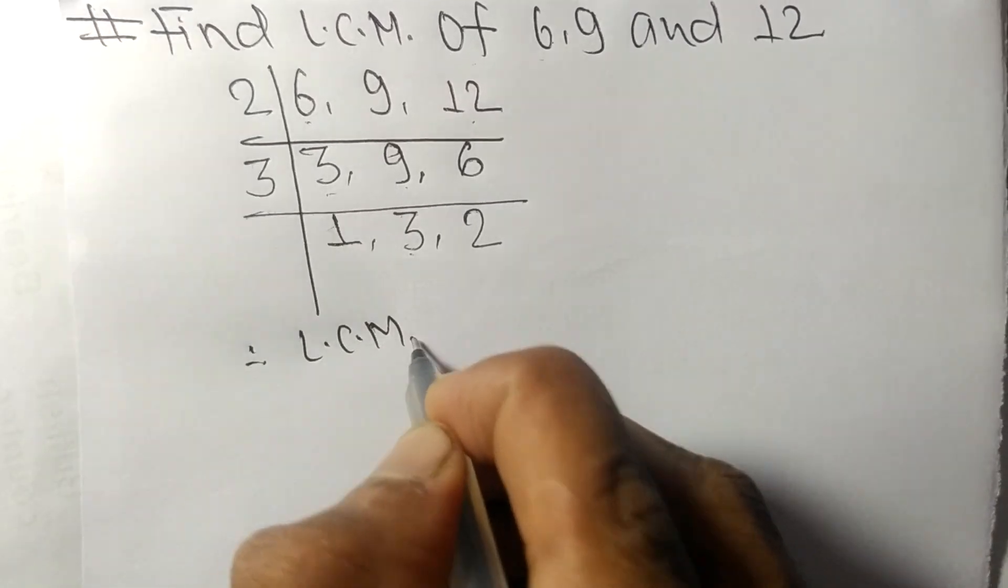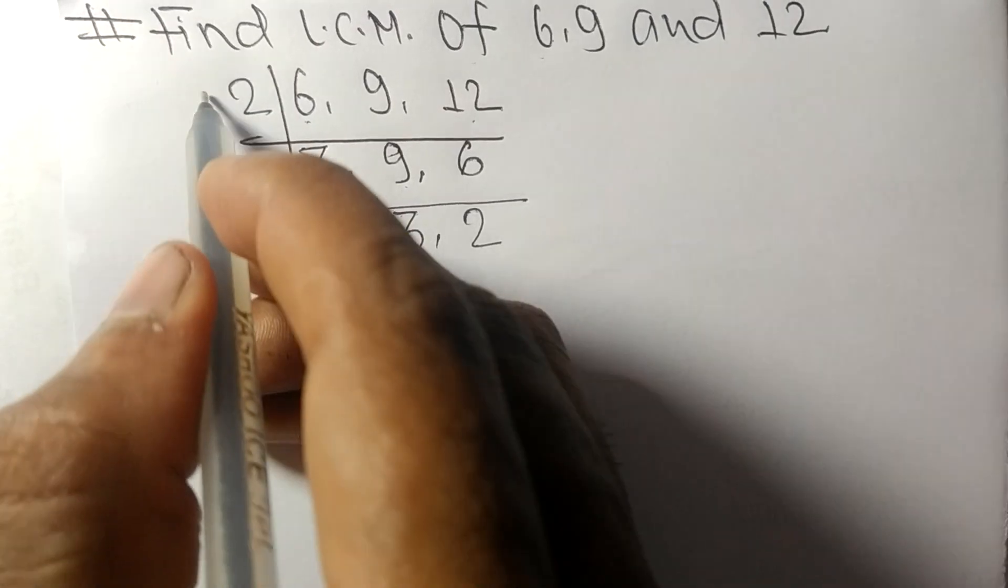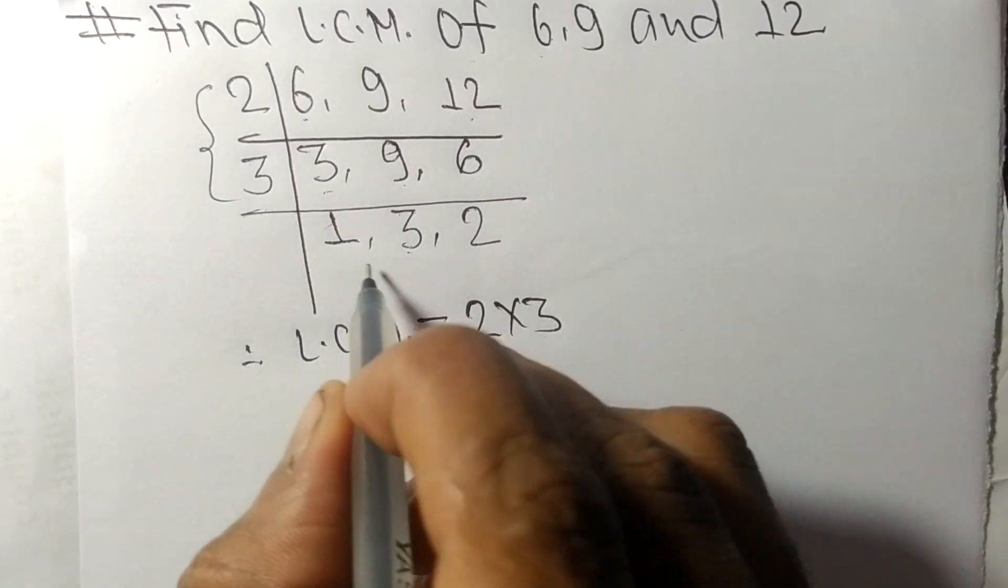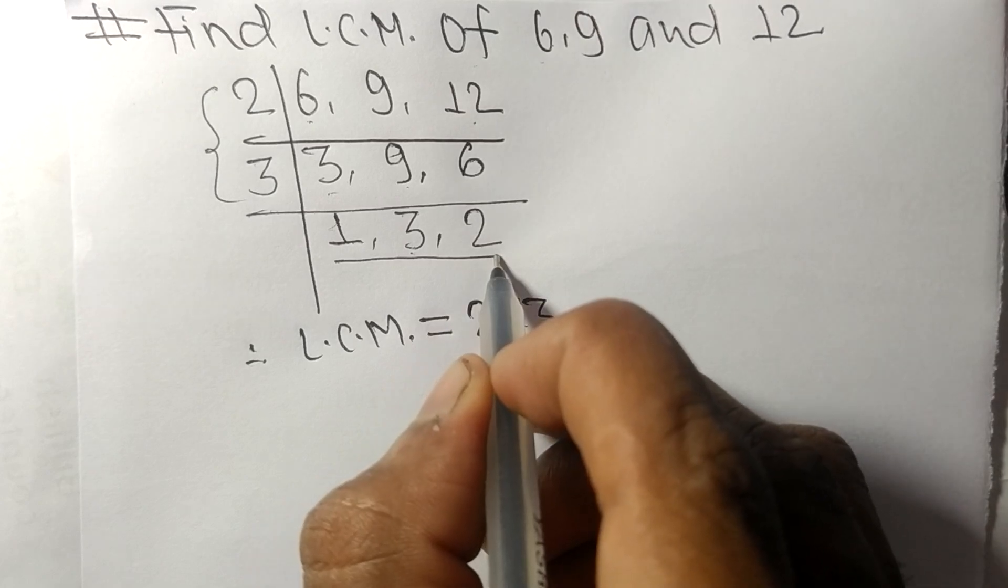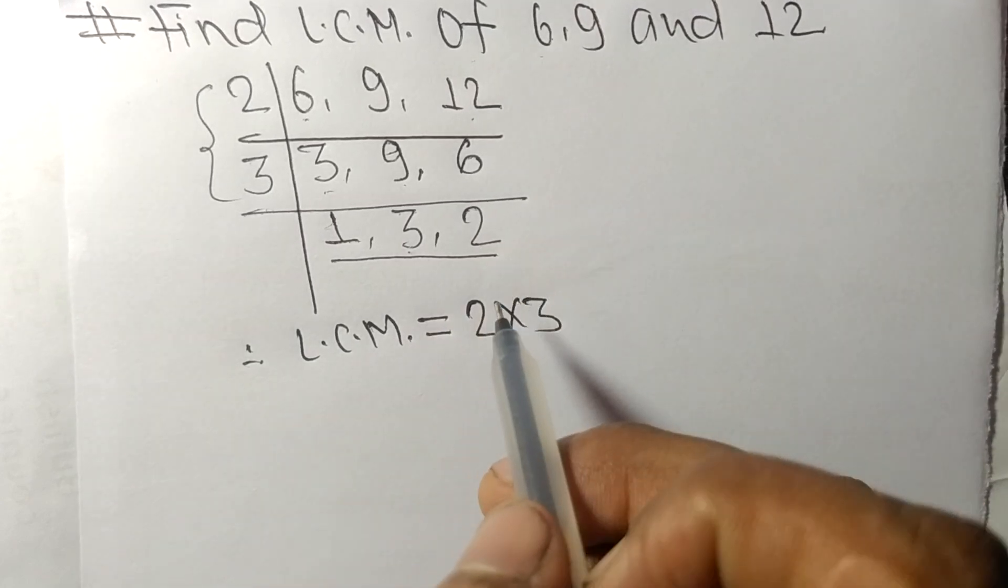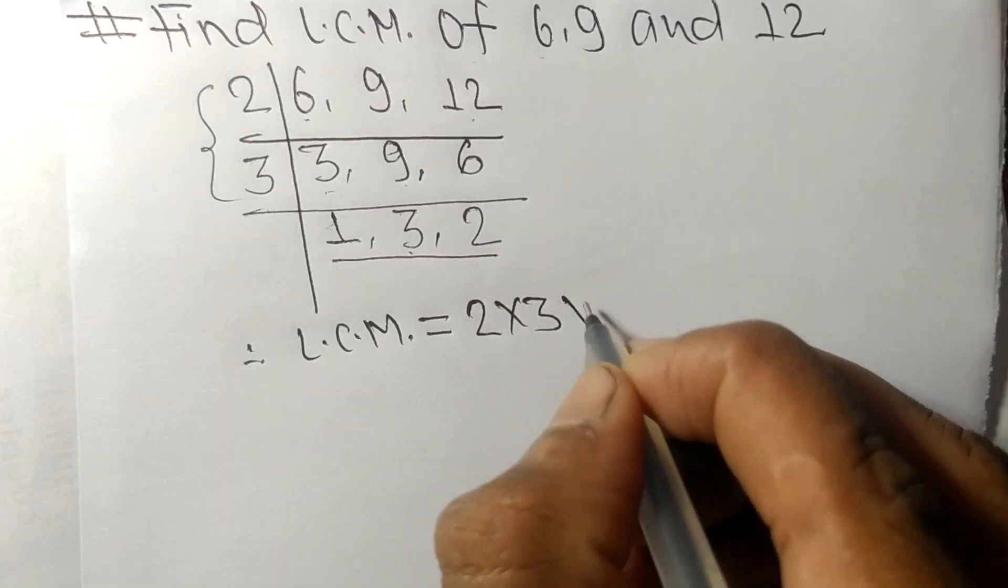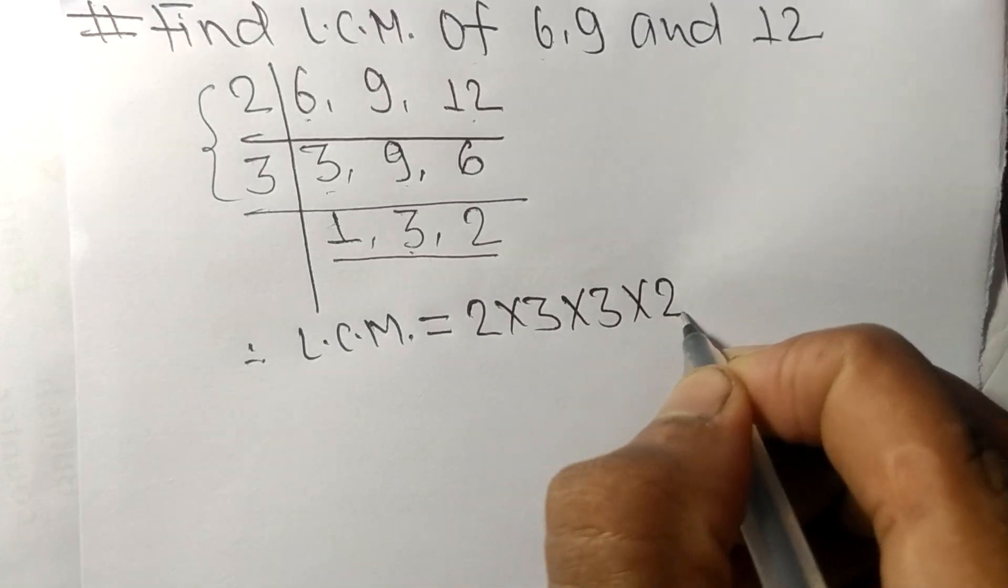Therefore, the LCM is equal to, from this side, it is 2 and 3. From this side, we choose the numbers greater than 1, that is 3 and 2.